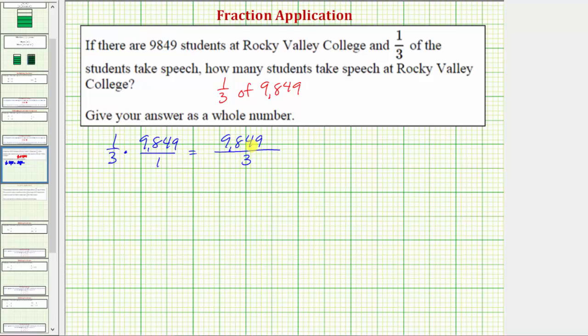Now we can simplify this fraction or recognize that a fraction bar means division, and therefore this is equal to 9,849 divided by three. Let's go ahead and find this quotient.